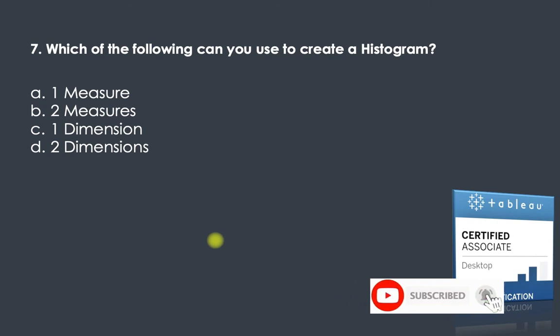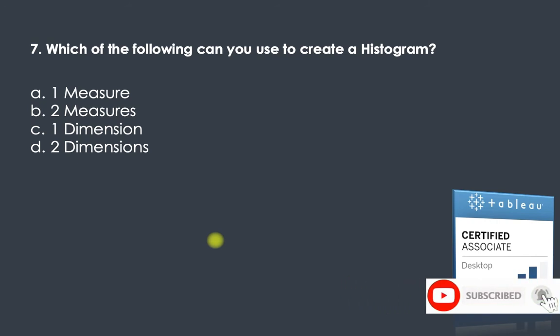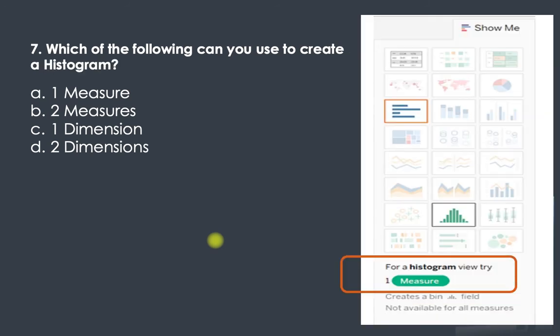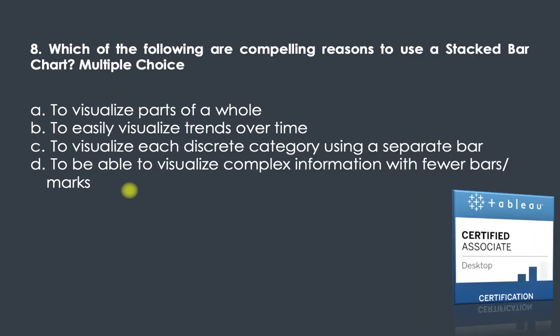The seventh question: which of the following can you use to create a histogram? Go to Show Me, click on histogram, and you will see it requires one measure. So the answer is one measure.